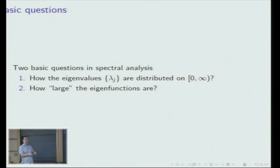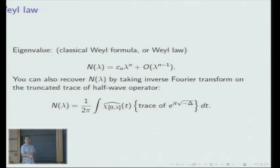To answer the second question, you have to properly ask how we should measure the largeness of the eigenfunctions. The first question is actually a special type of the second question. For the first question, we have the classical Weyl formula, or Weyl's law: if you consider the eigenvalue counting function — the number of eigenvalues not exceeding λ — we have this very simple and beautiful expansion formula, with a remainder term of order λ to the power n minus one.